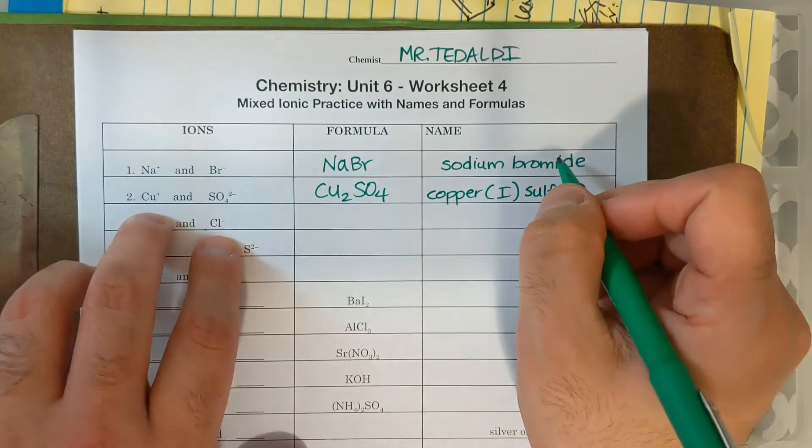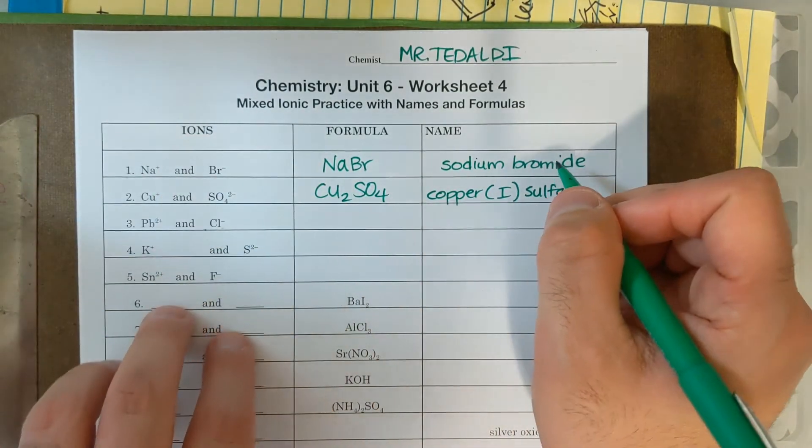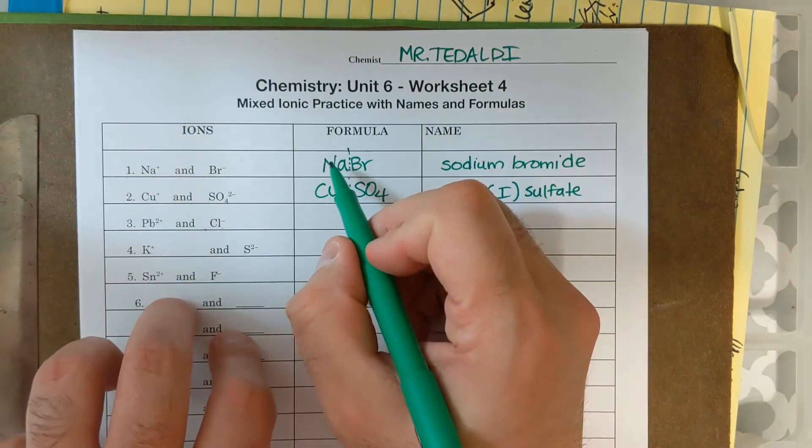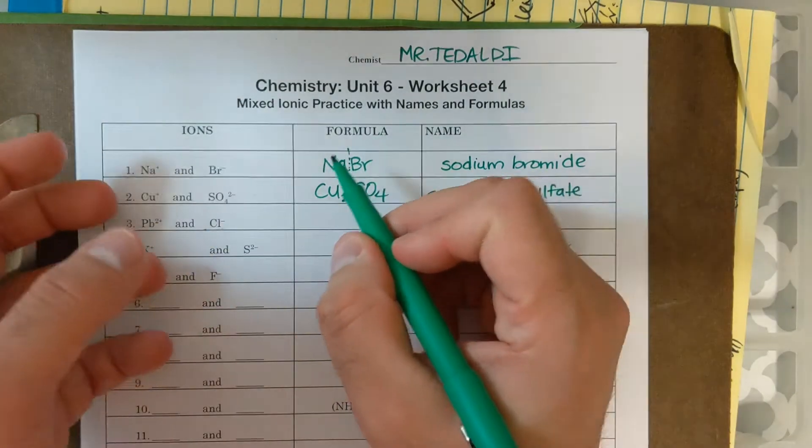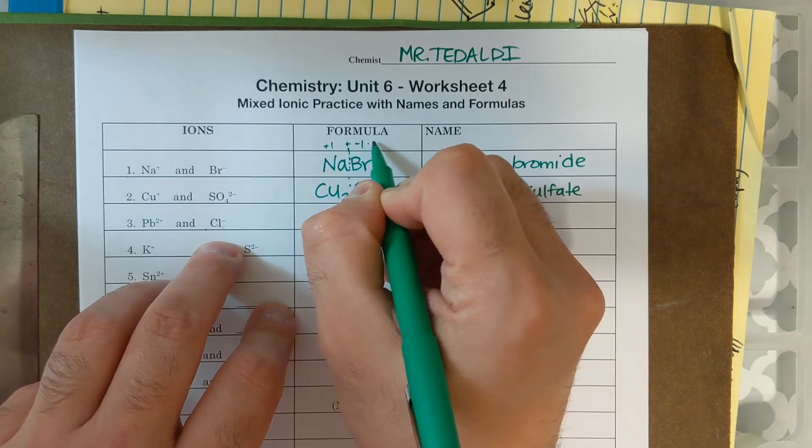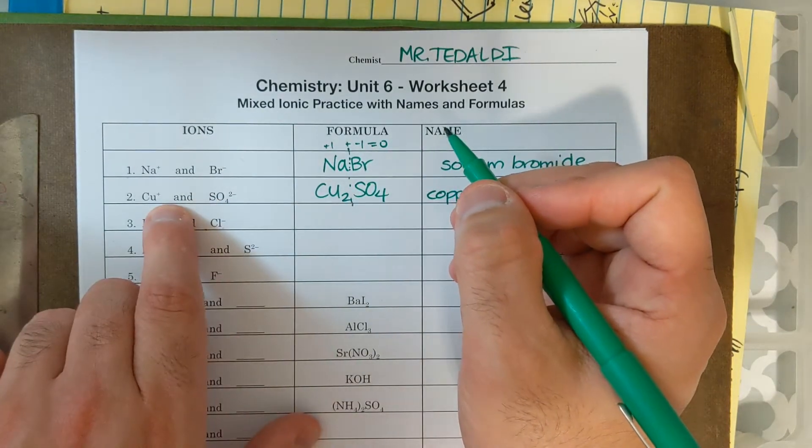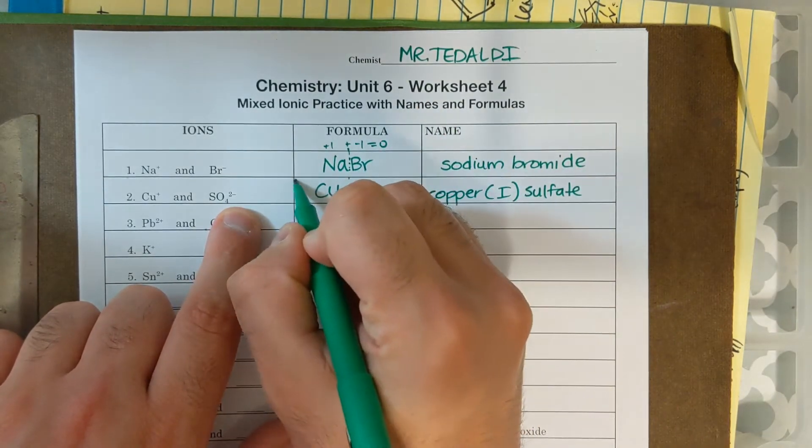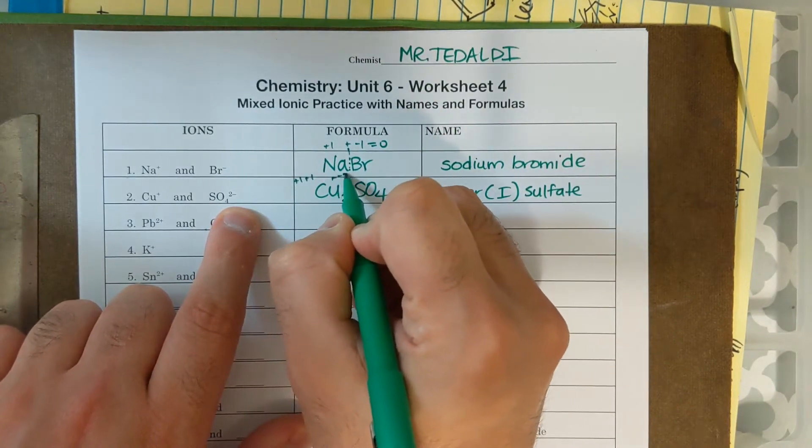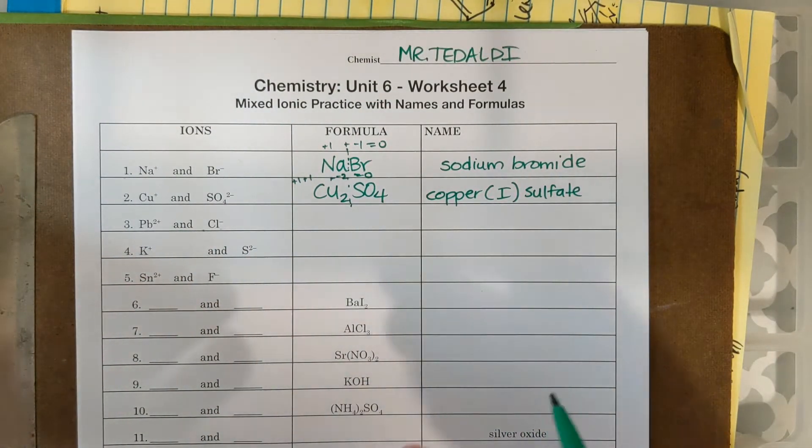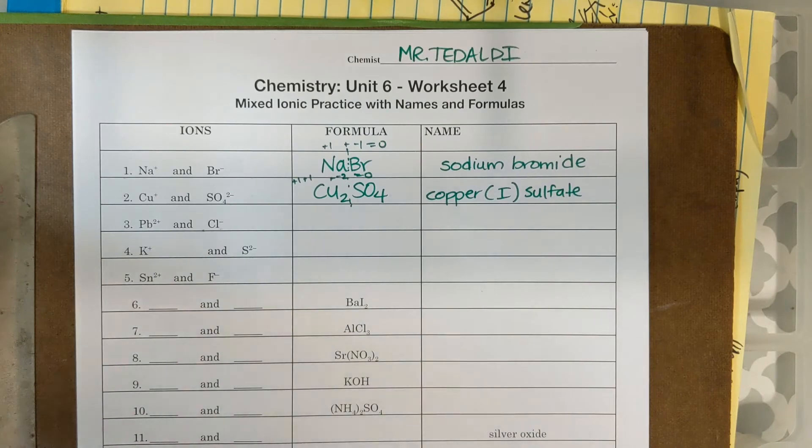And again, I know I'm saying crisscross method, but remember that the sum of the charges on the left side have to equal, but opposite in sign, the sum of the charges on the right side. So Na was plus one, Br was minus one, plus one minus one is zero. Cu is plus one, sulfate SO4 is two minus. There's two Cu's, so plus one and plus one, plus minus two, that equals zero. So from now on, when I say the crisscross method, I'm talking about the sum of the charges of all of the ions needs to add up to zero.